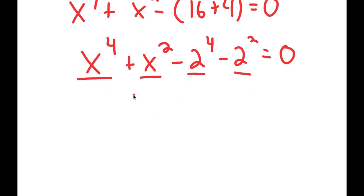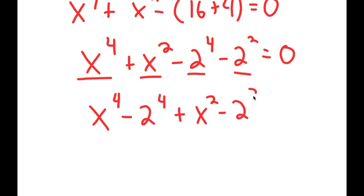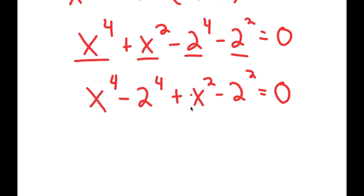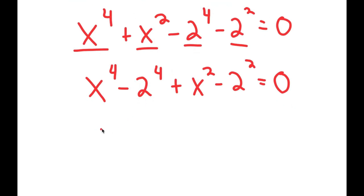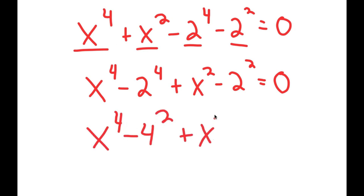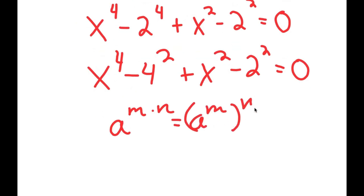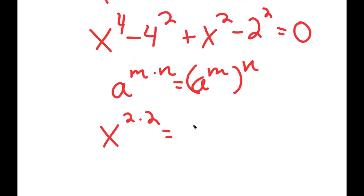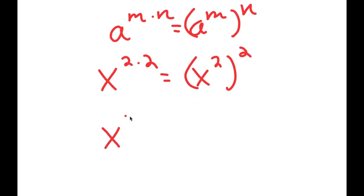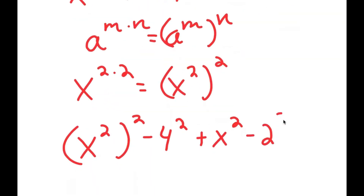Now I can put the powers of 4 together and the powers of 2 together. So I get x to the power of 4 minus 2 to the power of 4 plus x squared minus 2 squared is equal to 0. Now, 2 to the power of 4 is 16, and 16 is the same thing as 4 squared. So I get x to the power of 4 minus 4 squared plus x squared minus 2 squared. Since x to the power of 4 equals x squared to the power of 2, I get x squared to the power of 2 minus 4 squared plus x squared minus 2 squared is equal to 0.